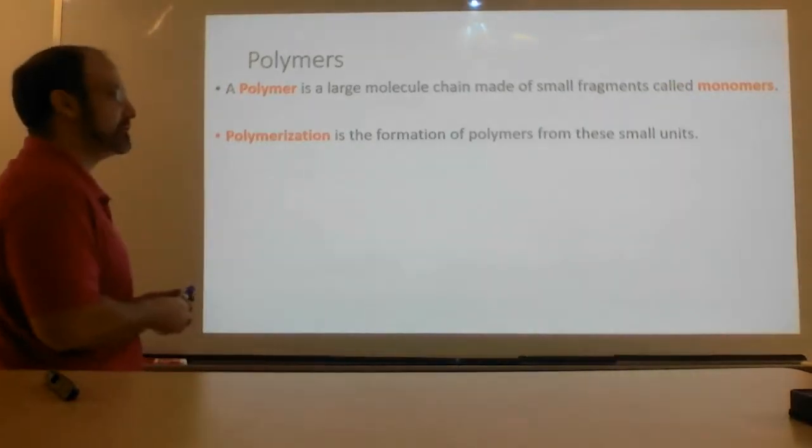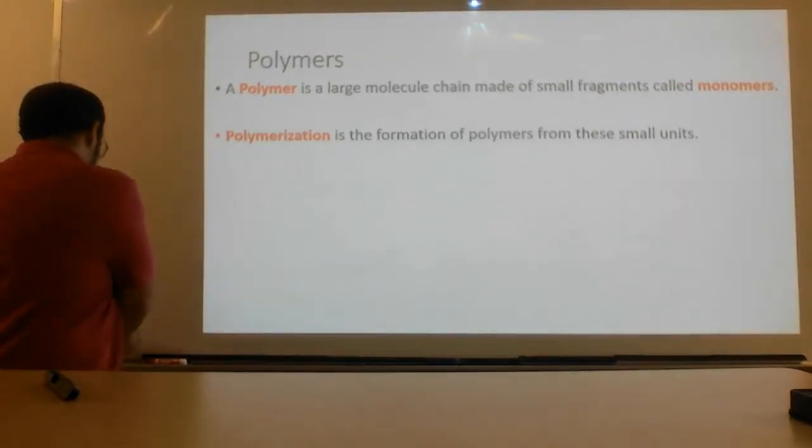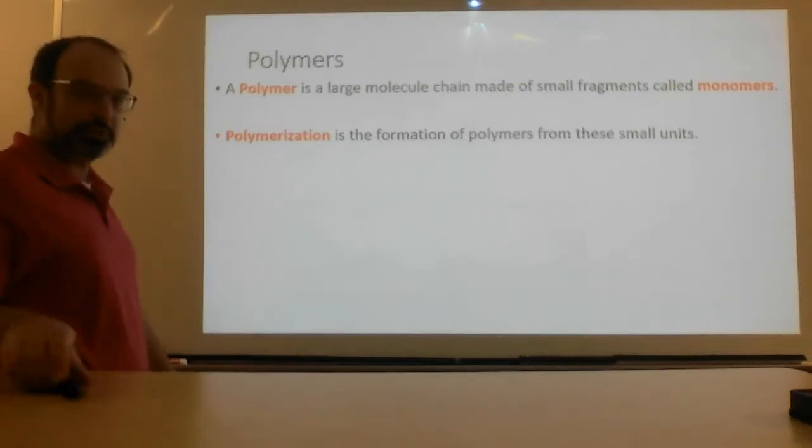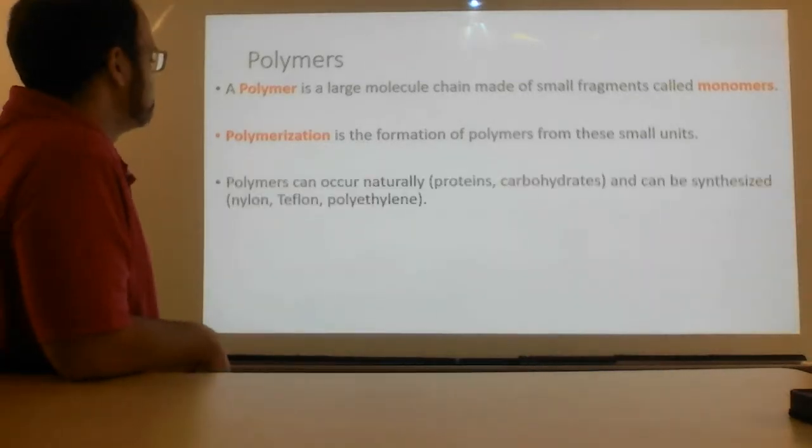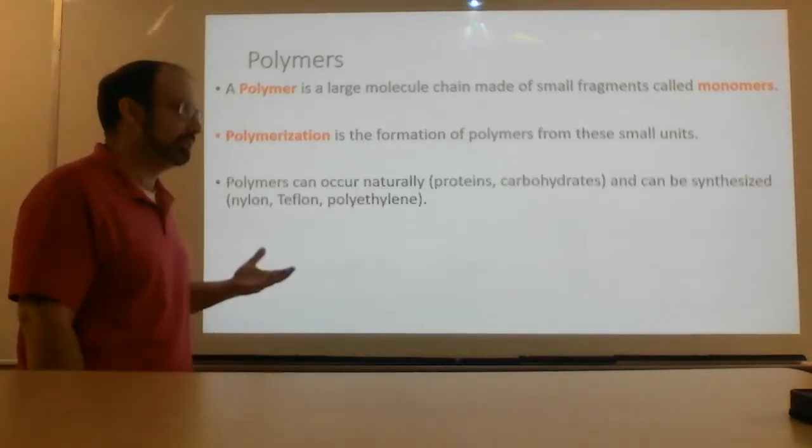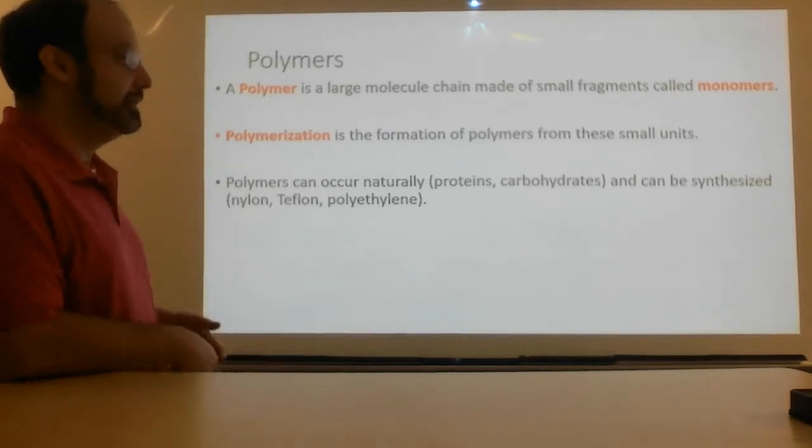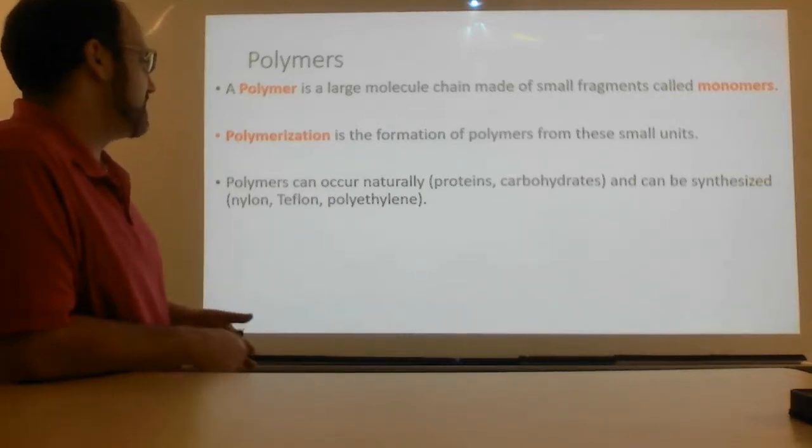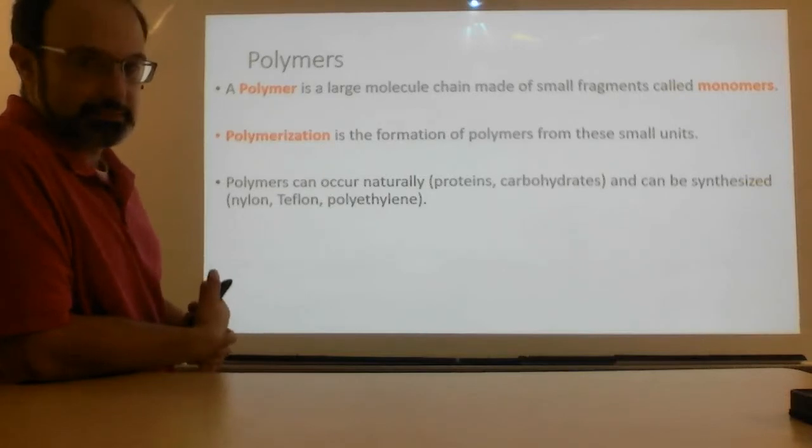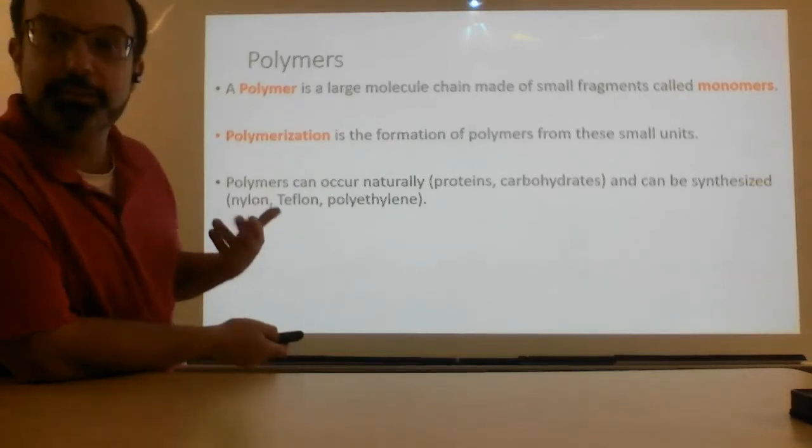Polymerization is the formation of polymers from these smaller units. So we build it out slowly, one step at a time. Polymer can occur naturally, such as proteins or carbohydrates. And they can be synthesized by humans, such as nylon, teflon, and polyethylene.